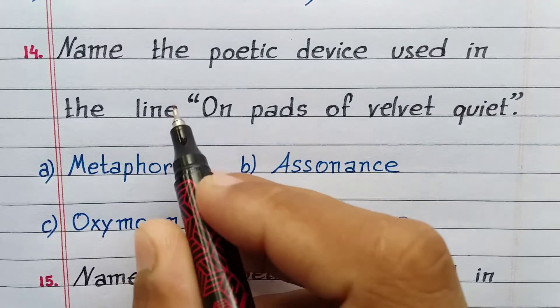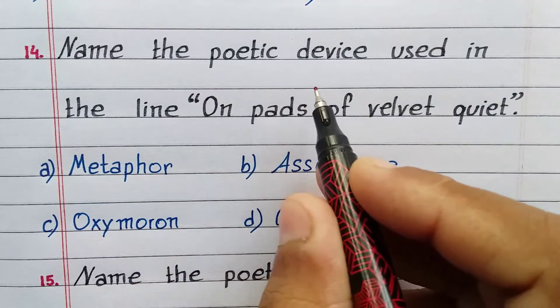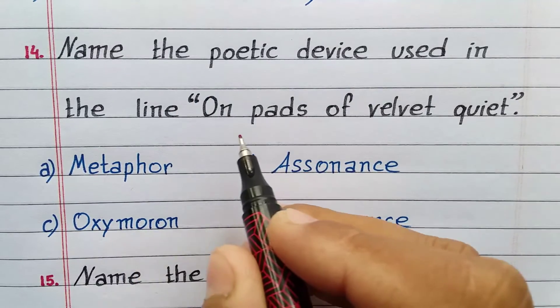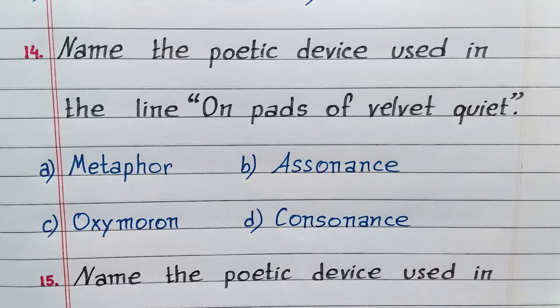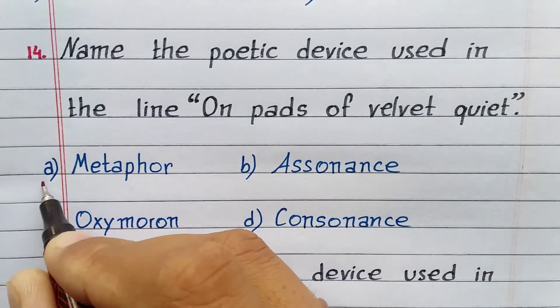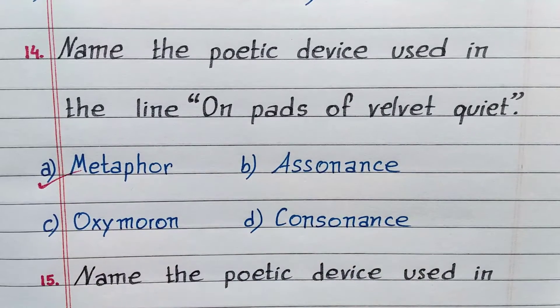Name the poetic device used in the line 'pads of velvet quiet.' Option A. Metaphor.